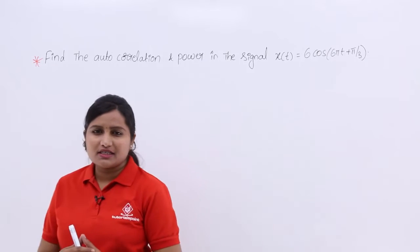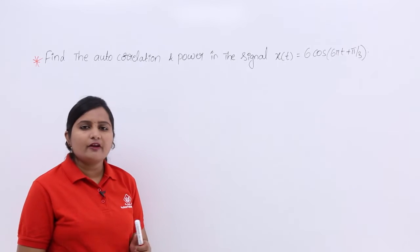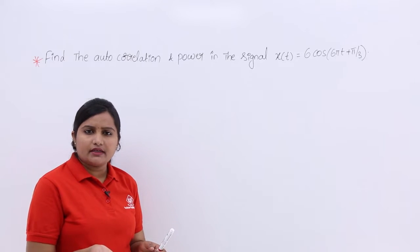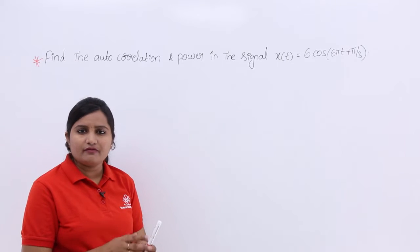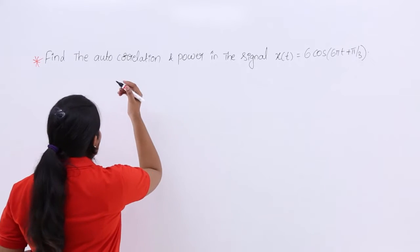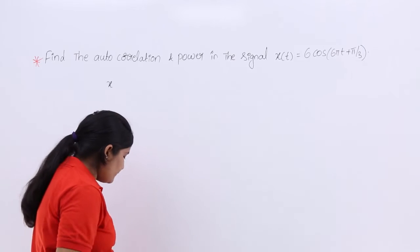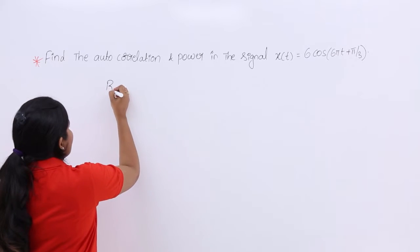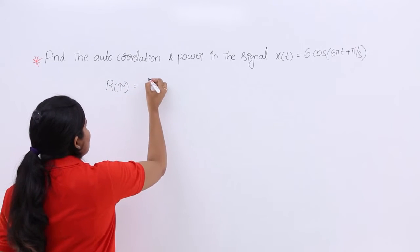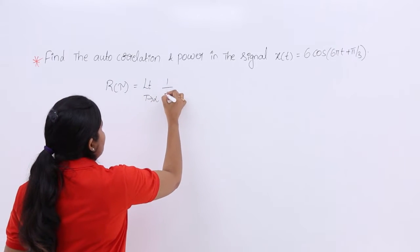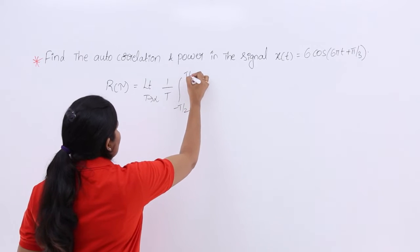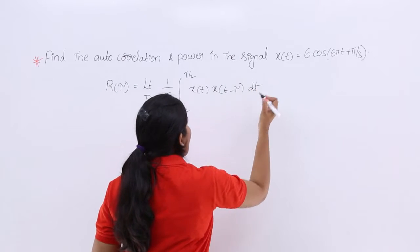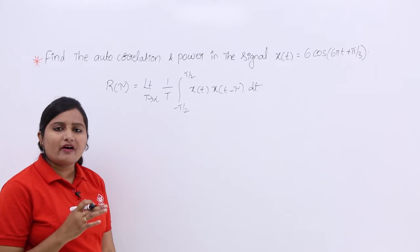Whenever the autocorrelation function of a power signal is given, definitely go for integration only. Do not use the convolution process taken for energy signals. The autocorrelation function r(τ) for a power signal is: r(τ) = limit T→∞ (1/T) ∫ from −T/2 to T/2 of x(t)·x(t−τ) dt.